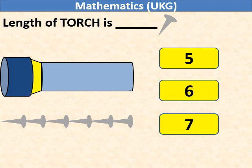Length of torch is blank pins. If you count the pins, it is 6.